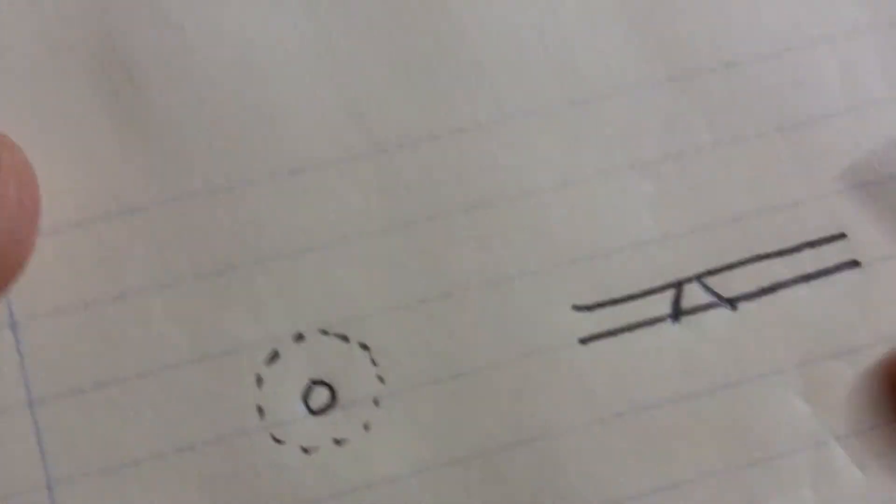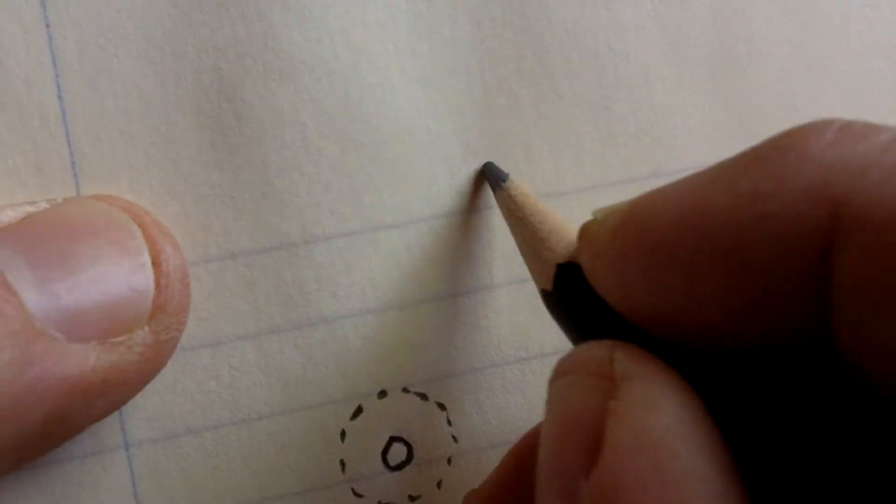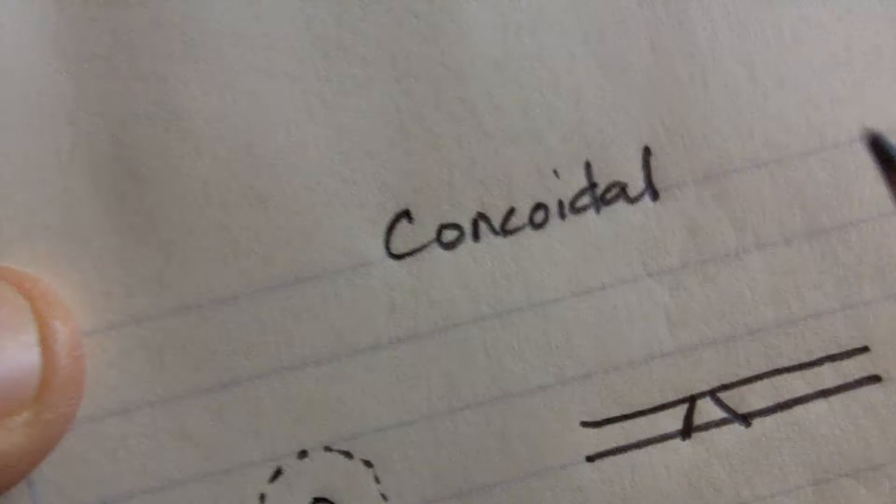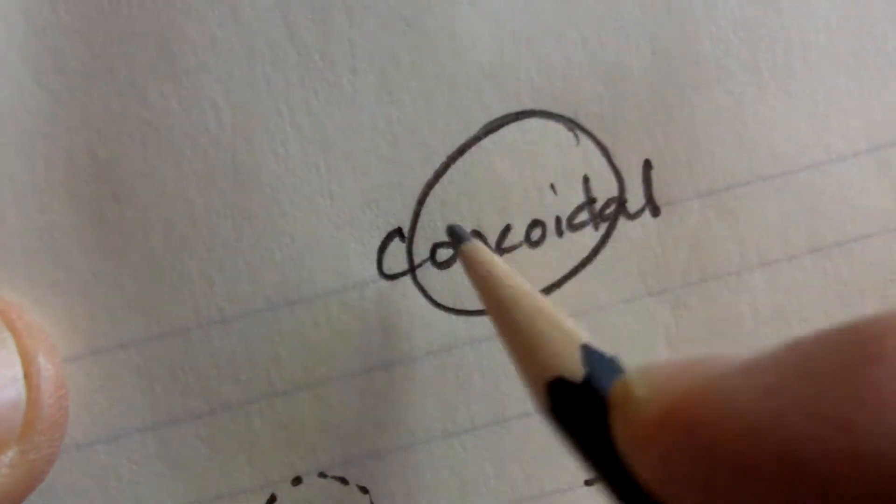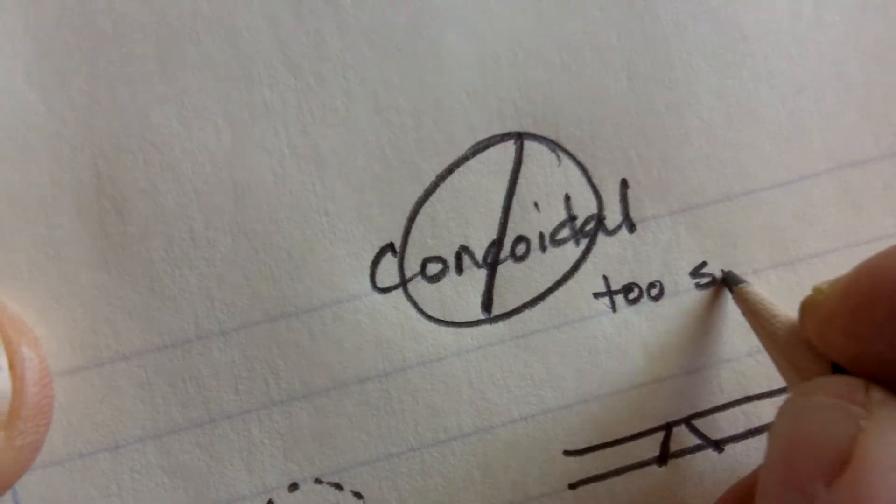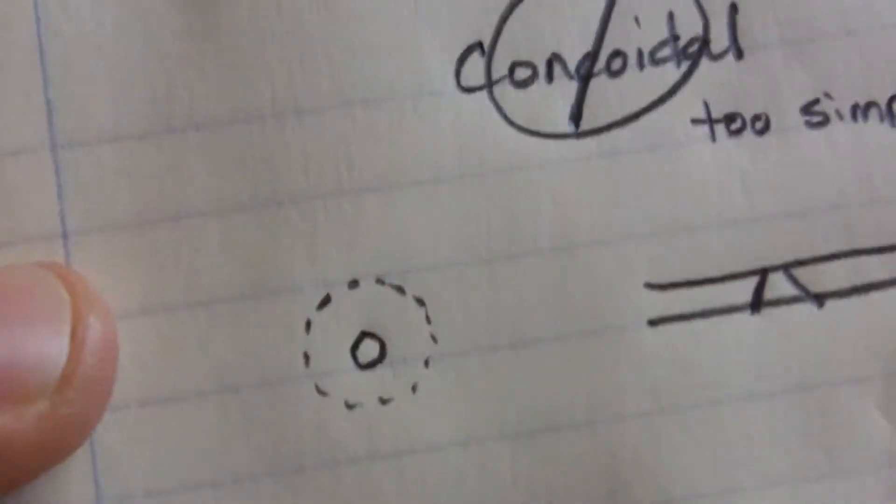There's one classic example that all the books have and many of the flintknapping videos have, and it's discussing something called conchoidal fracturing. Now, I personally don't like that explanation. It's too simple, and I'm going to go over why I think so.